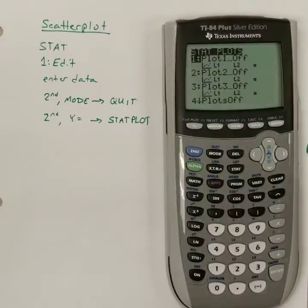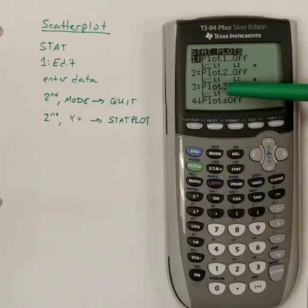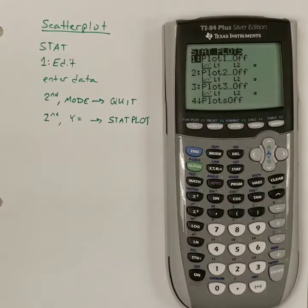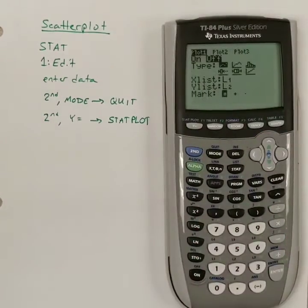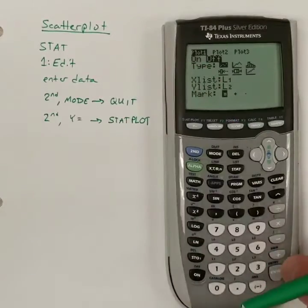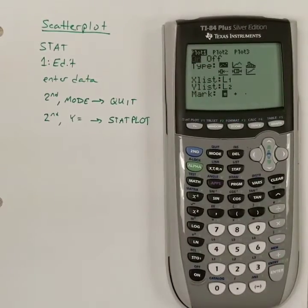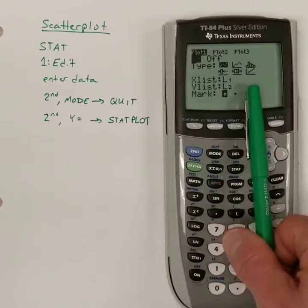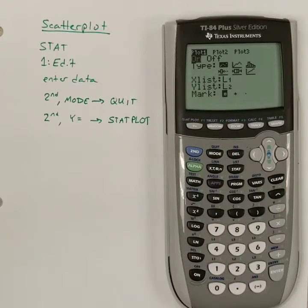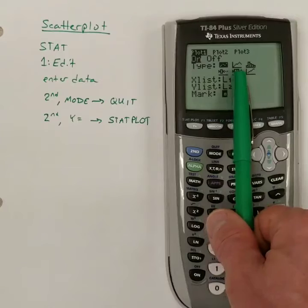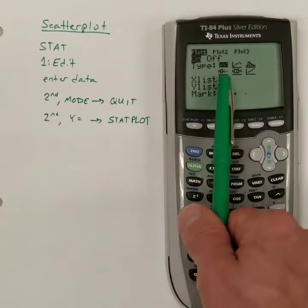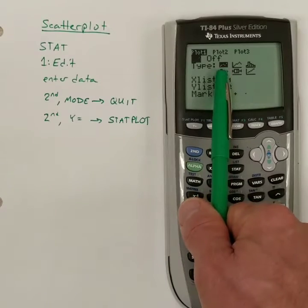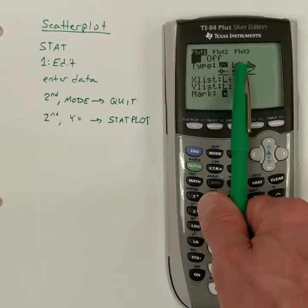We want plot 1 on. Basically, this gives you a bunch of different plots. Just like in the Y equals screen, you could type in a bunch of different functions. We can plot a lot of different things. I'm just going to use the first one. And I want to turn it on. So, I have to hit enter. Select on. Hit enter. And then it gives me a bunch of different ways to interpret the data graphically.